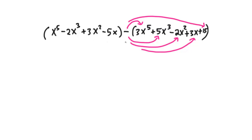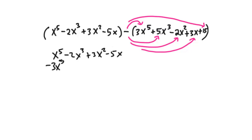Let's recopy the first polynomial: x to the fifth minus 2x cubed plus 3x squared minus 5x. After distributing the negative sign, we get negative 3x to the fifth, then negative 5x cubed, then a negative and a negative makes positive 2x squared, then negative 3x, and negative times positive 15 gives us negative 15.